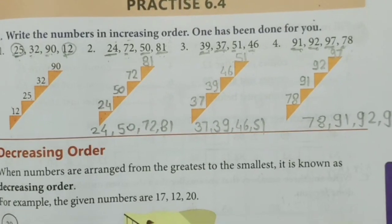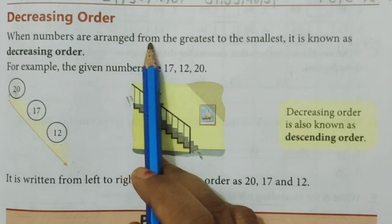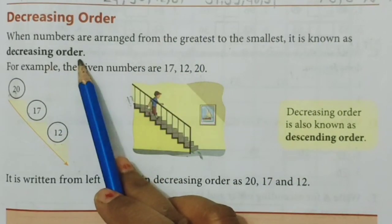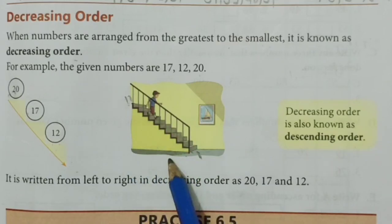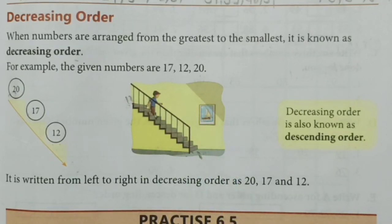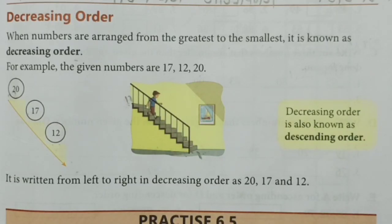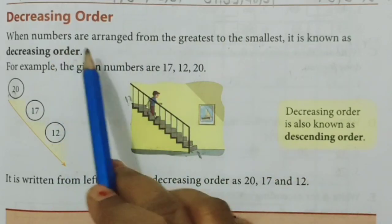Now we will see the decreasing order in short. Decreasing order: when numbers are arranged from the greatest to the smallest, it is known as decreasing order. As per the word, you can apply your logic — increasing के opposite क्या होता है? Decreasing. Increasing means बढ़ जाना, and decrease means कमी होती जाना — higher to lower. And as we use 'ascending order' for increasing, we use 'descending order' for decreasing. Increasing and ascending have the same meaning; decreasing and descending have the same meaning.